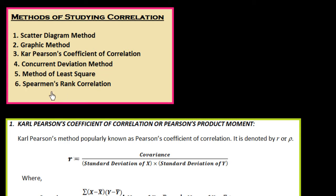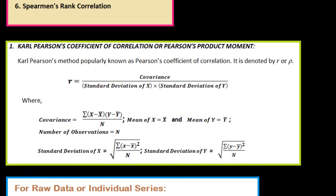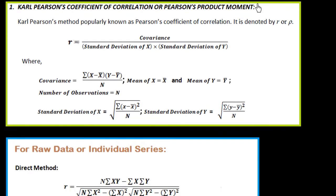Here we study about Karl-Pearson's coefficient of correlation. It is also called Pearson's product moment. The Karl-Pearson method is popularly known as Pearson's coefficient of correlation. It is denoted by a small italic r, or rho.